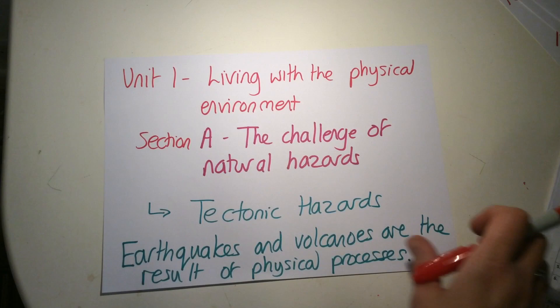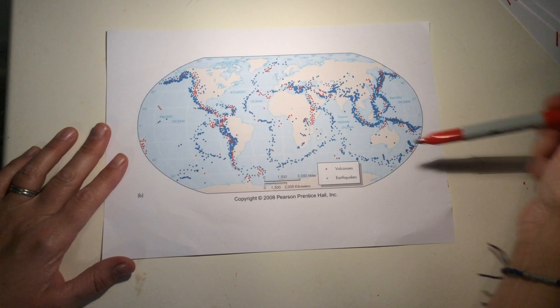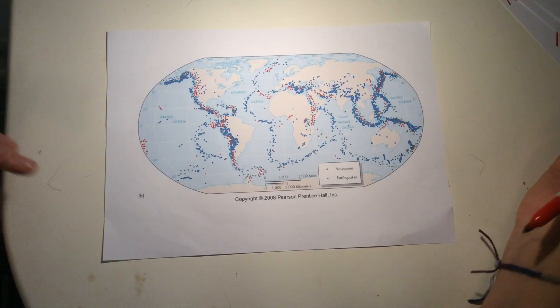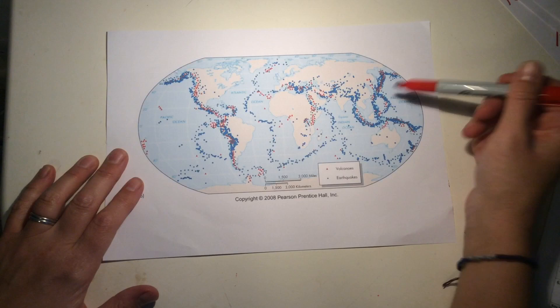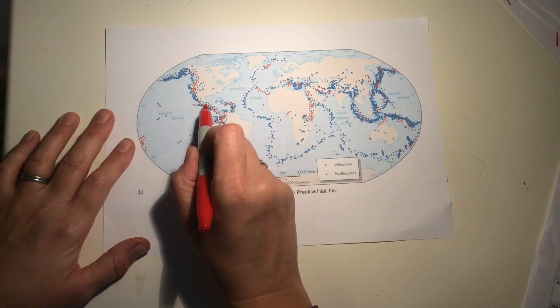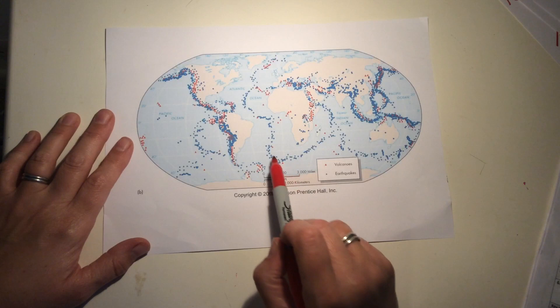You've seen lots of maps like this over time. This is a map of the world. The blue dots are earthquakes and the red triangles are volcanoes. As you'll see, these appear in patterns around the world. If we look at the Pacific Ocean, all around the edge we can see very heavy concentrations of volcanoes and earthquakes—that's the Pacific Ring of Fire.